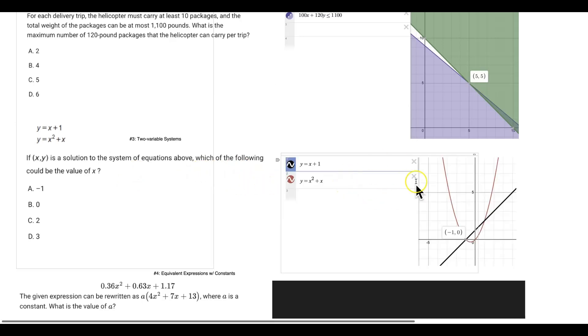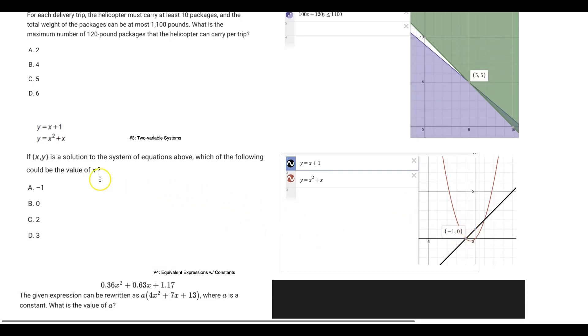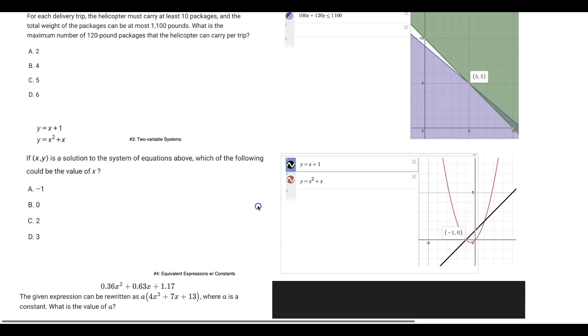Just plug this in to Desmos. It'll give you the intersections here. You can see negative 1, 0 is going to be the x, y coordinate. So the value of x is going to be negative 1.